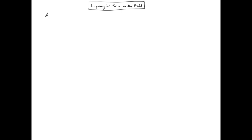Our task is now to determine what is a Lagrangian for a vector field. Once we have this Lagrangian, we will be able to determine the classical limit and also we will be able to solve it in quantum field theory for a free field, and from that we will be able to look at interaction between sources. So exactly the same thing as what we did for the scalar field — we are now just upgrading our theory to the case of a vector field.